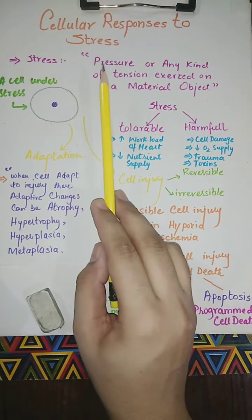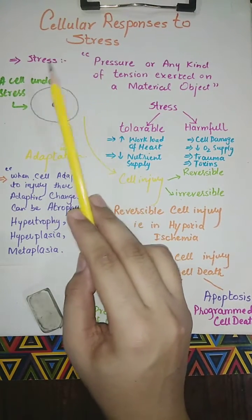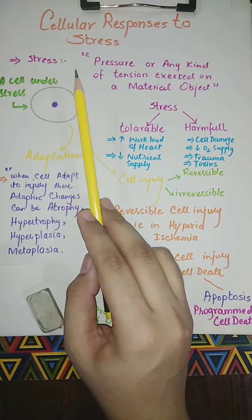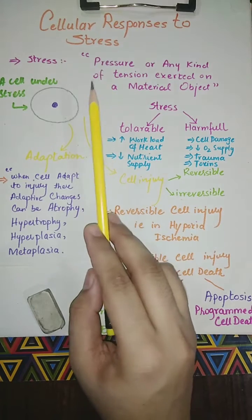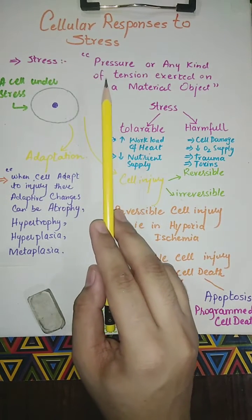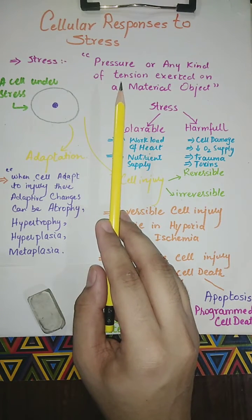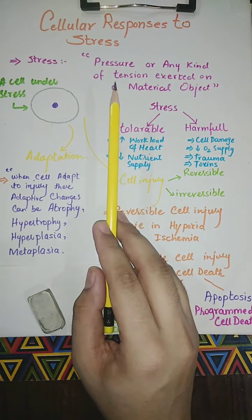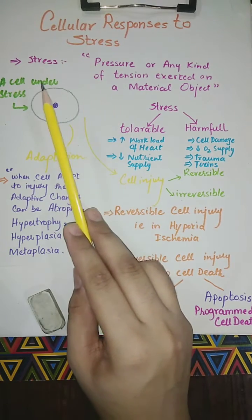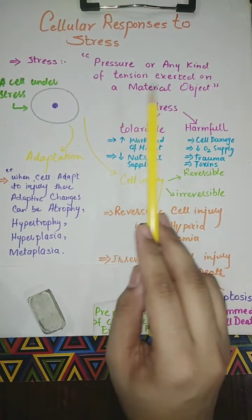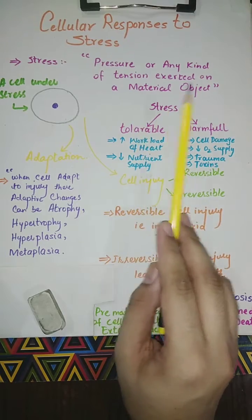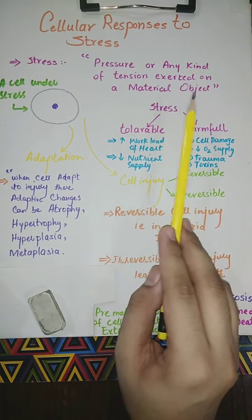Cellular response to stress: cells actively interact with the environment, constantly adjusting their functions to accommodate changing demands and extracellular stress. Basically, what is stress? Stress is a pressure or any kind of tension exerted on a material object.